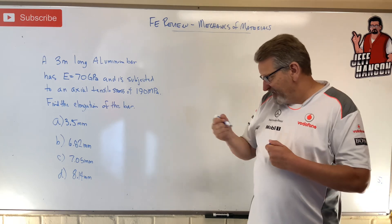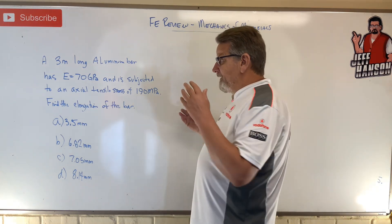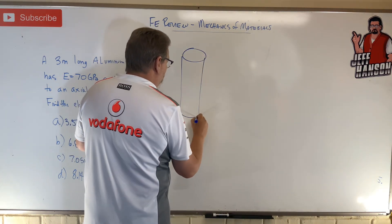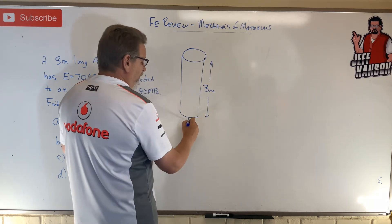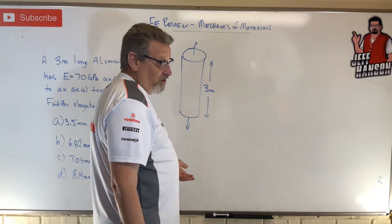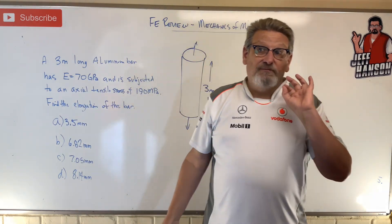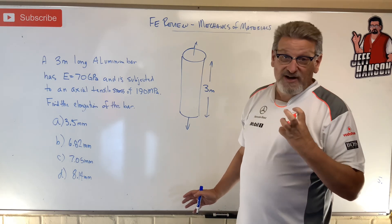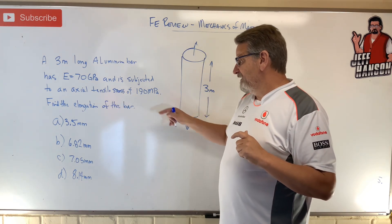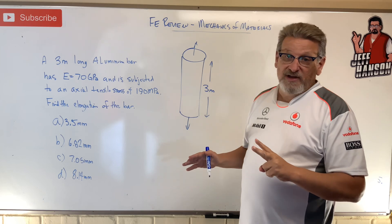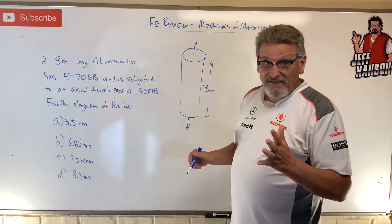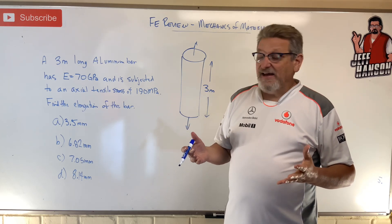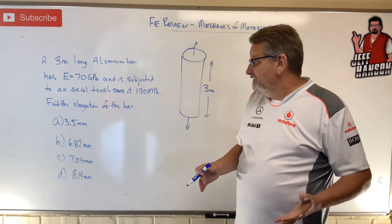Alright, did you work it out? I hope the answer is there. Here's what I've been given: a bar that is three meters long. I don't know the force acting on it, I don't know the cross-section, but I know that force divided by cross-section equals sigma — tensile stress, normal stress — and that is given. There are really two choices for elongation: strain, or delta equals PL over AE. I don't think I have all the information for that second one, so let's try the strain method.